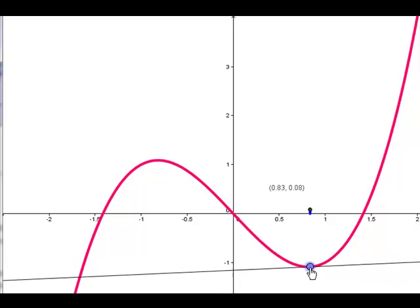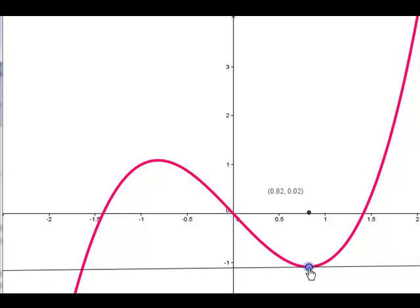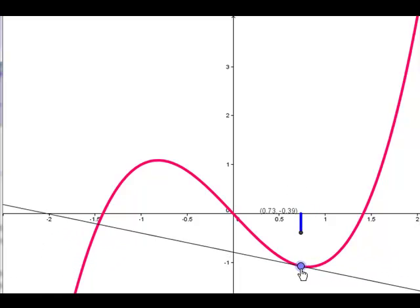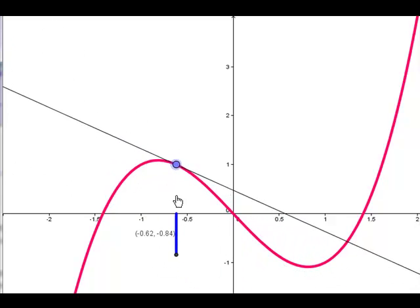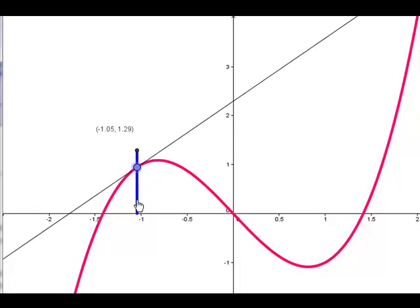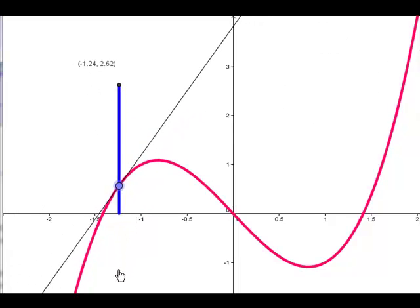In fact, right here, where our tangent line's horizontal, it's zero. Where our function is decreasing, it's negative. Here, it's zero again. Let me put it in another place where it's positive.